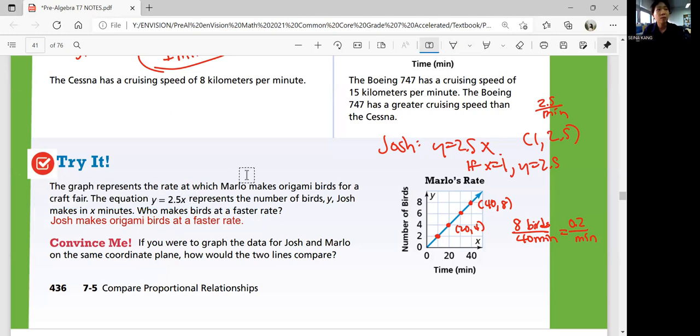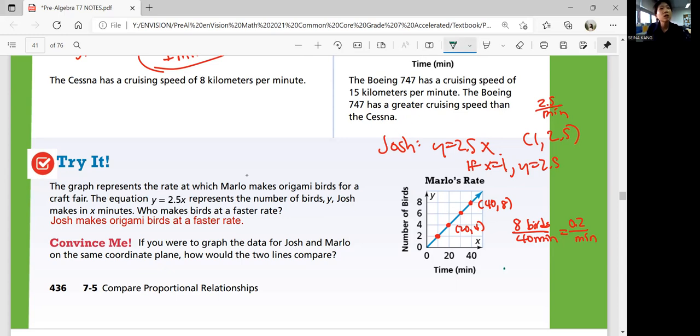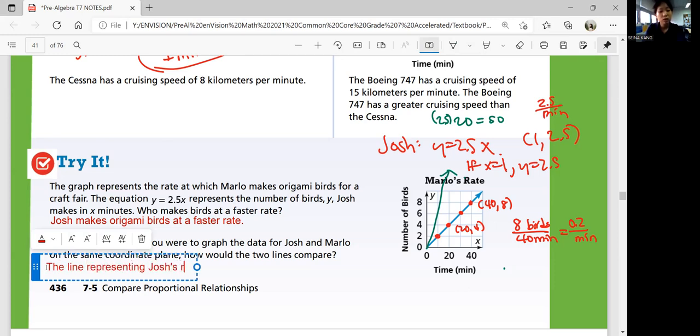So convince me, if you were to graph the data for Josh and Marlow on the same coordinate point, how would the two lines compare? So Marlow's graph is already there, but should we graph Josh's? So that means if Josh spends 20 minutes, 20 times 2.5 would be 50. He would make 50 origami. So 20, that's way high, right? Yeah, that's way up. So it's gonna be a lot faster. The line representing Josh's rate would be a lot more steeper. So you don't have to actually draw all the graphs. But just know that the line representing Josh would be.